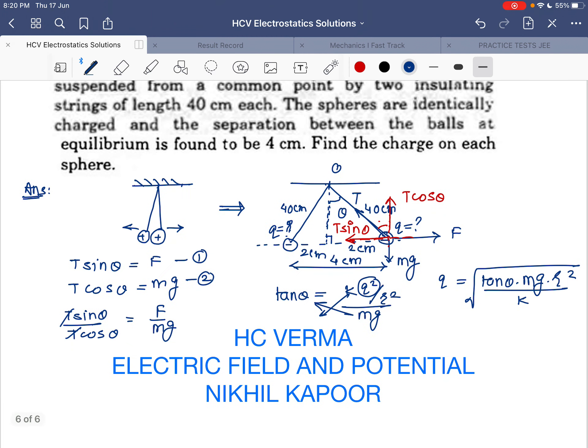For this triangle, tan theta will be the opposite side over adjacent, which is 2 centimeters over 40 centimeters. This angle is very small, so I can say tan theta can be nearly written as theta, and theta equals 2 over 40, which is 1 by 20. Since theta is very small, this is approximately 40, so it becomes arc length equals radius times theta.